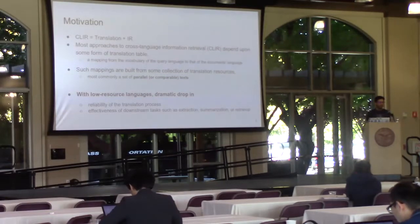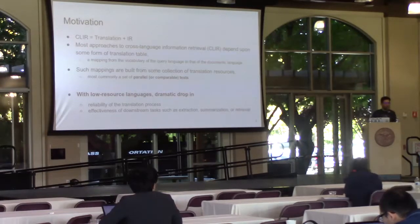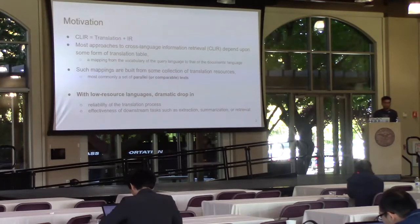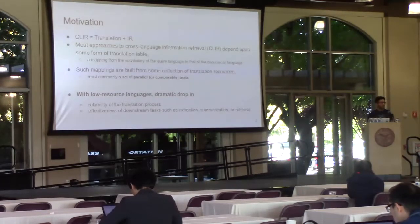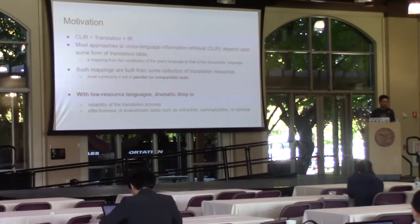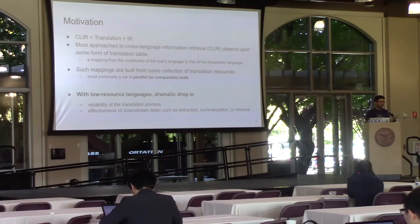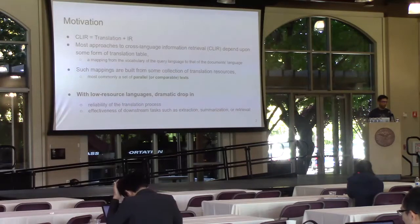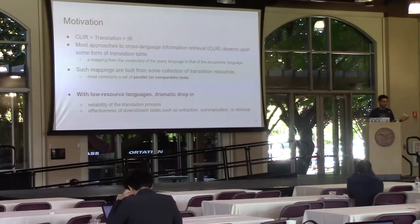For example, you have a query in French and you want to retrieve from the English corpus. Most approaches for CLIR are based on some form of translation tables, which basically map the vocabulary of the query to the vocabulary of the corpus. It can be a parallel machine translation or a cross-lingual word embedding.